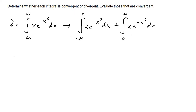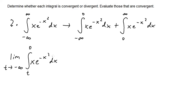Both integrals are improper, so we set up limit notation for each. For the first: the limit as t approaches negative infinity of the integral from t to zero of x times e to the negative x squared, dx. For the second: the limit as t approaches infinity of the integral from zero to t of x times e to the negative x squared, dx.